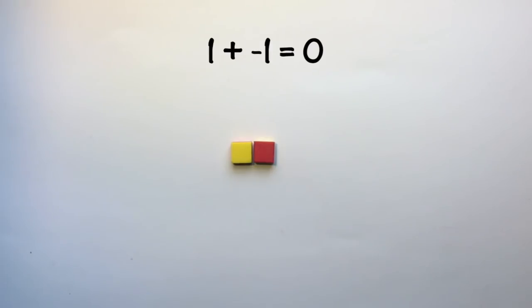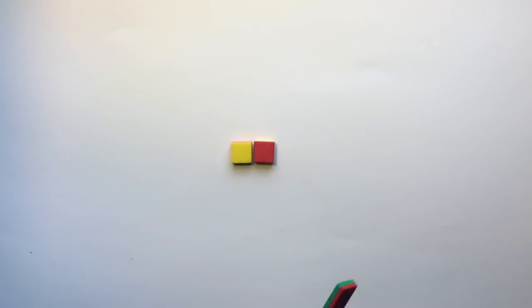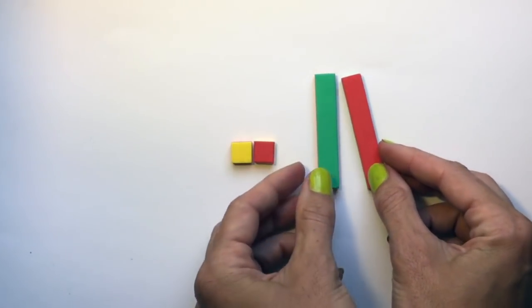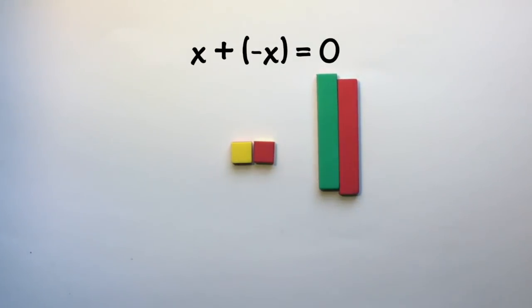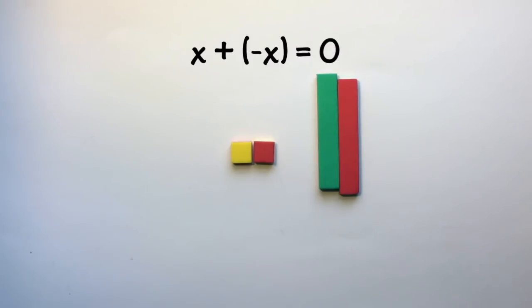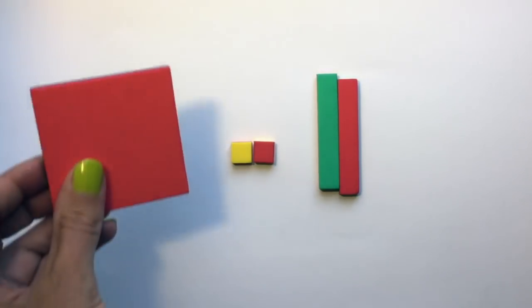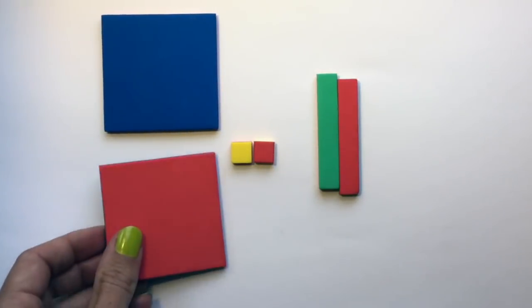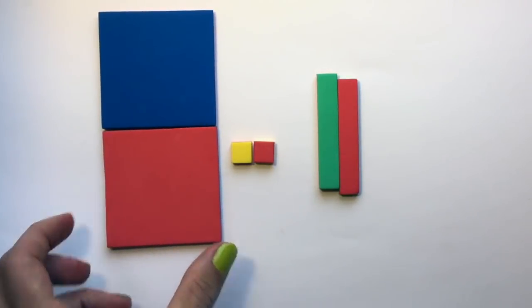We can create zero pairs with any of our algebra tiles. A positive x and a negative x cancel out to make zero as well. As well as a positive x squared and negative x squared cancel out to make zero.